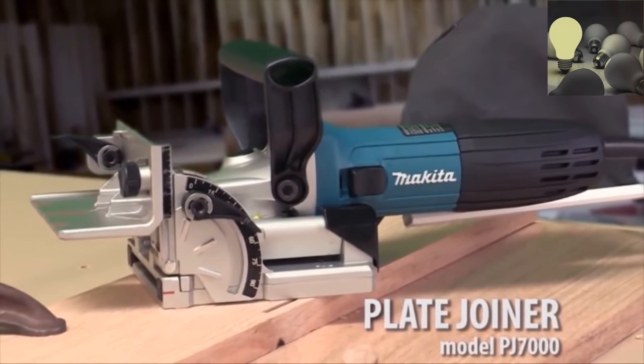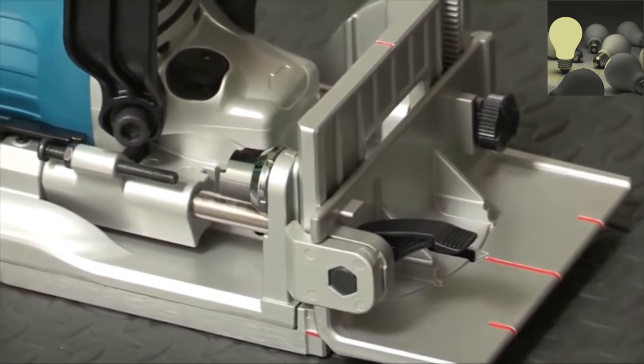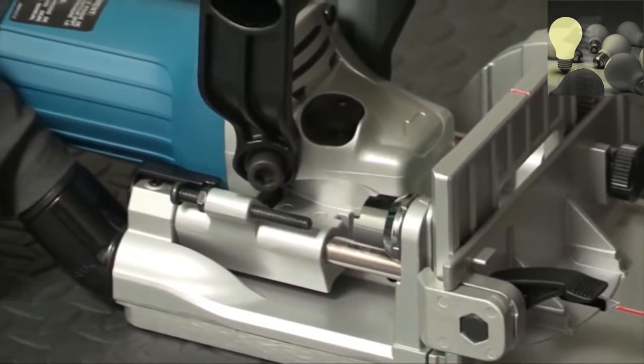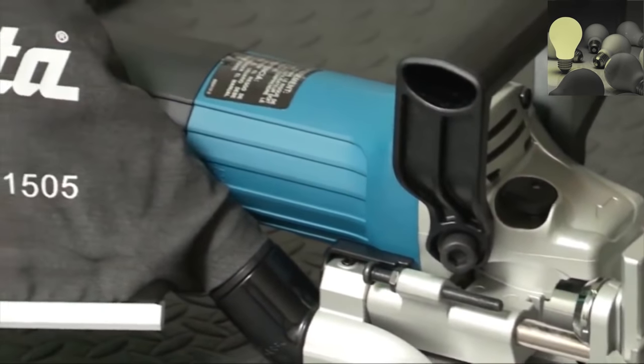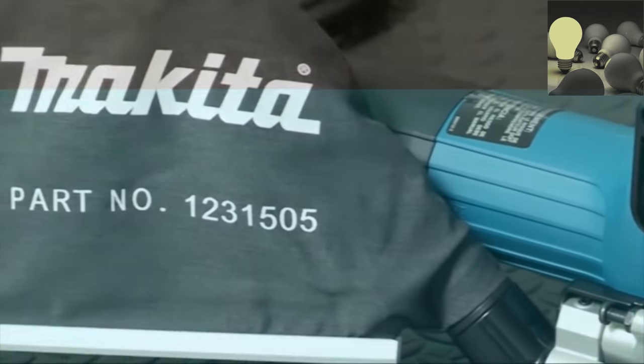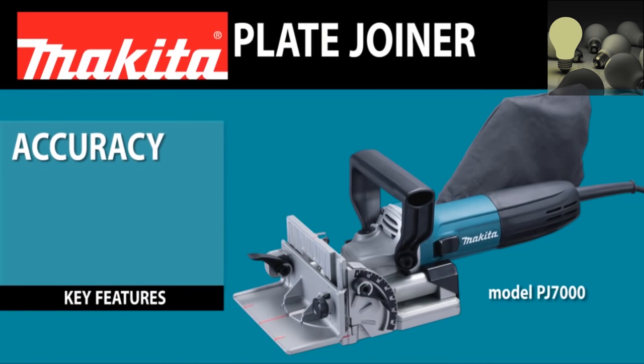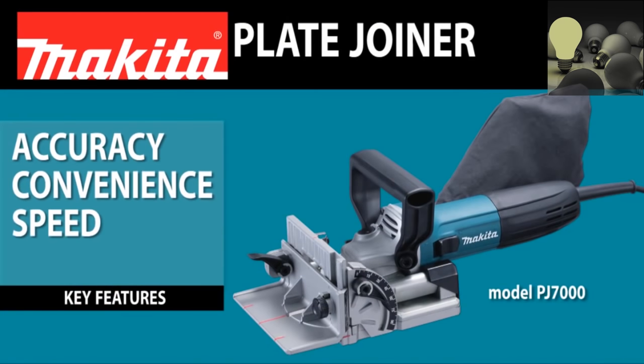Introducing the Plate Joiner. Slim and ergonomic. With its cast aluminum front body, it's designed for making strong plate joints with efficiency, accuracy, convenience, speed, and comfort.